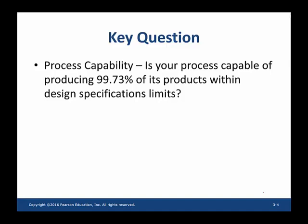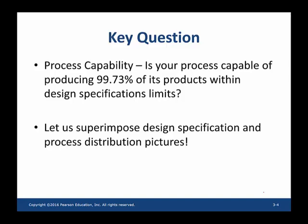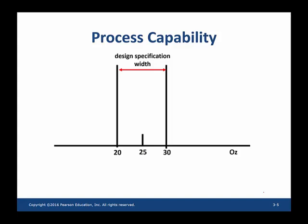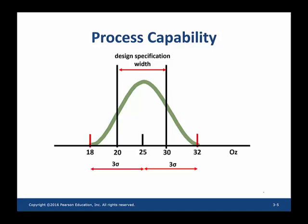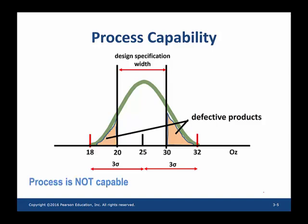To answer that question, let us superimpose what we saw earlier — the design specification and the process distribution. The design specification width is 10 ounces, from 20 to 30. The process distribution has extreme points three standard deviations from the mean, so 99.73% of products fall between 18 and 32 ounces. Some products fall beyond the design specification width, indicated by the orange shaded areas. These products are defective, and clearly this process is not capable.